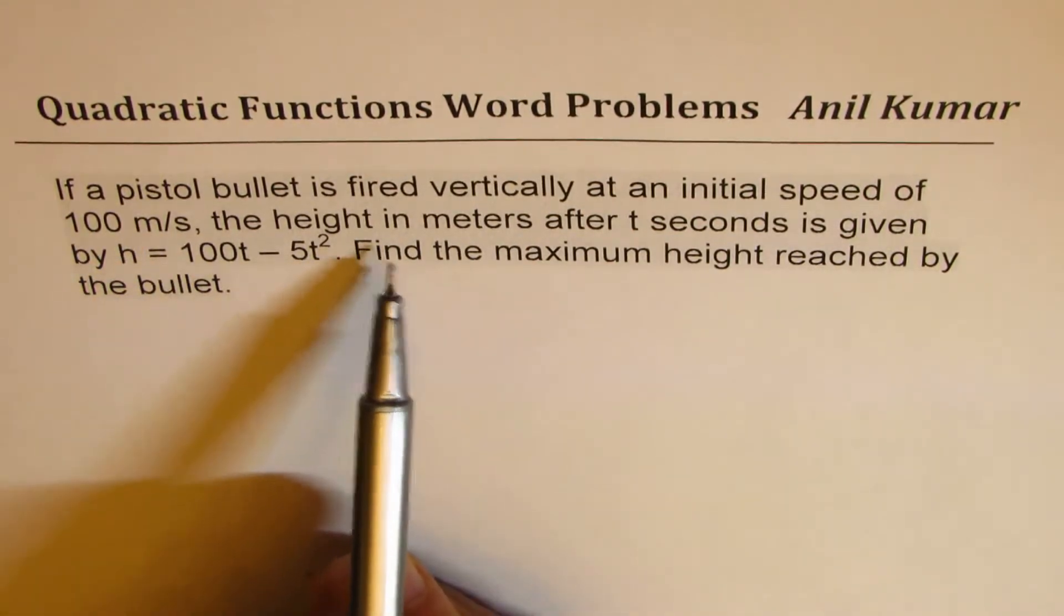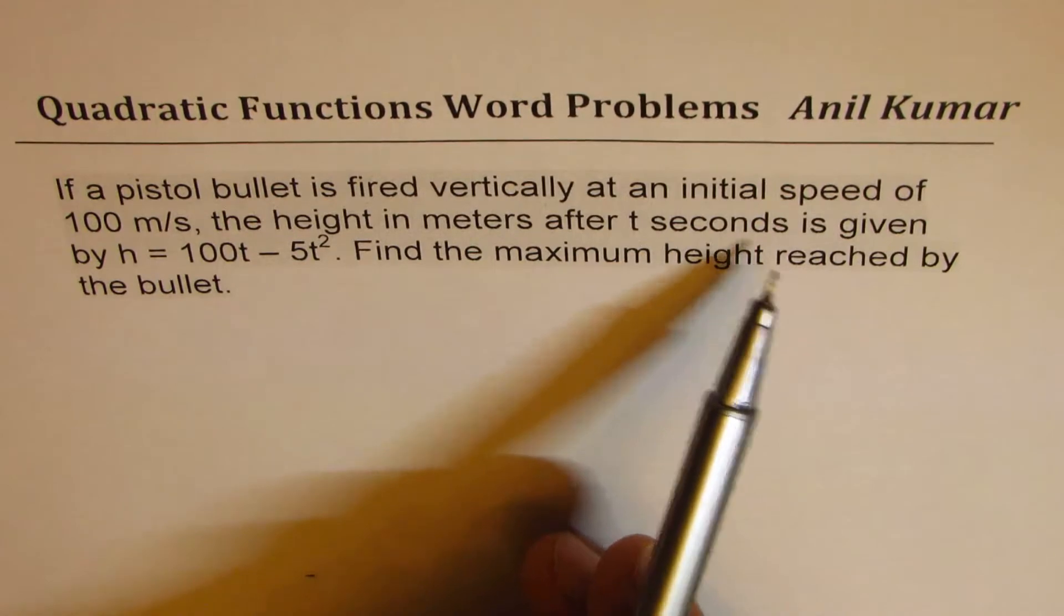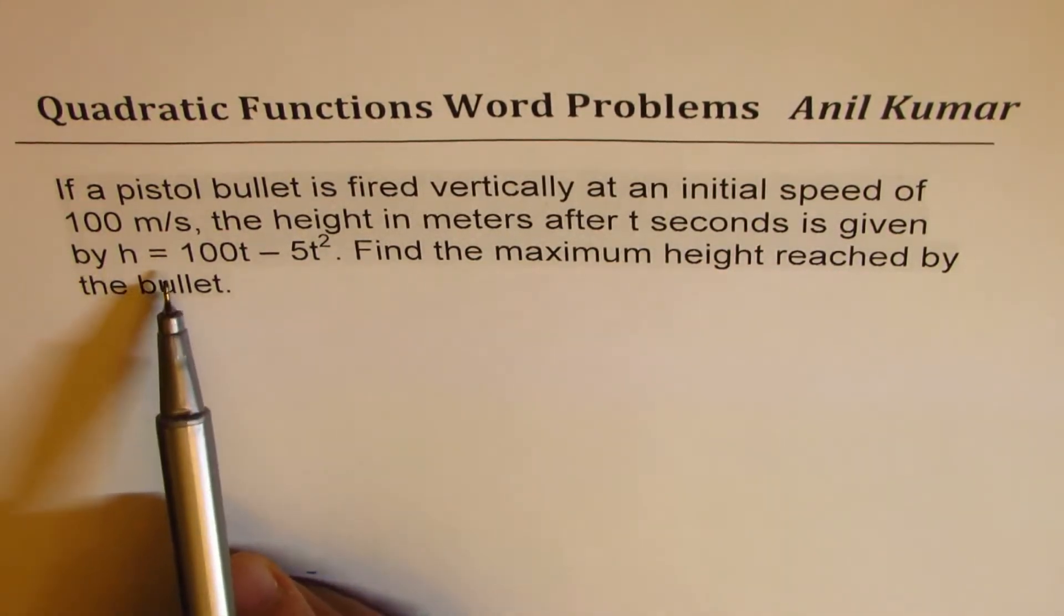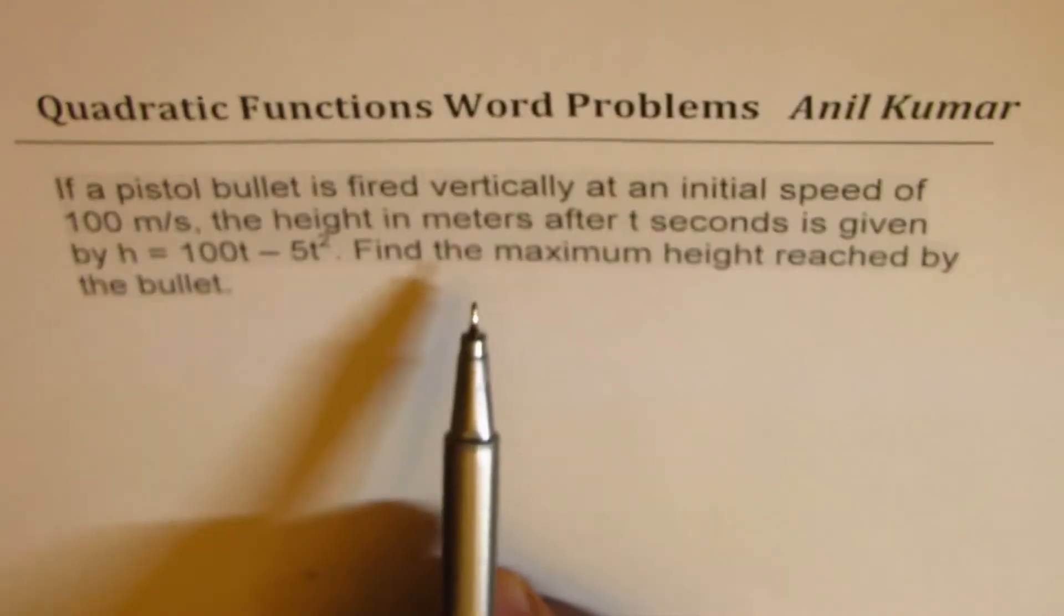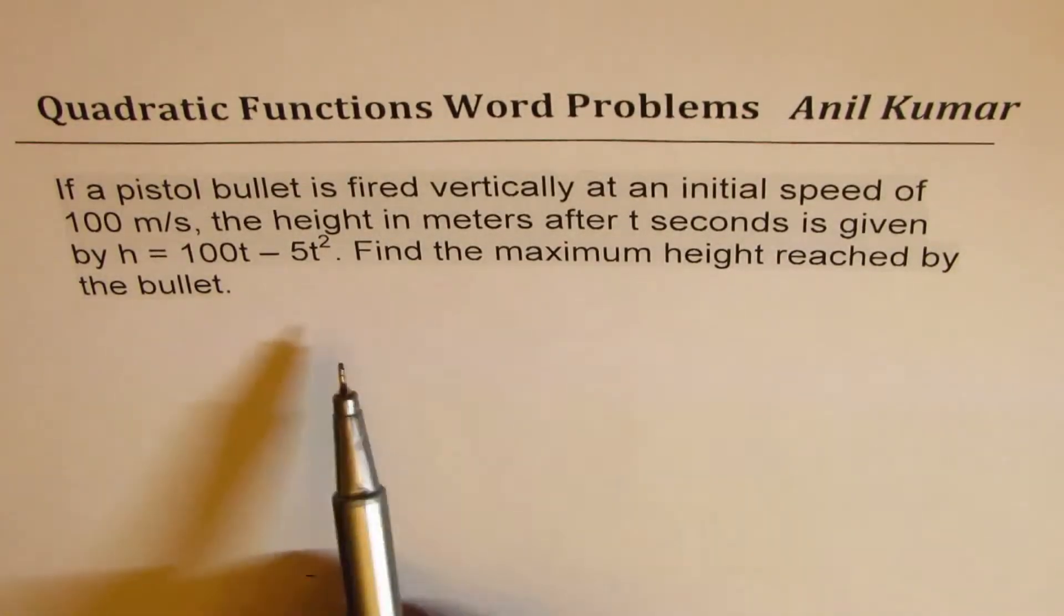the height in meters after t seconds is given by h equals to 100t minus 5t squared. Find the maximum height reached by the bullet.